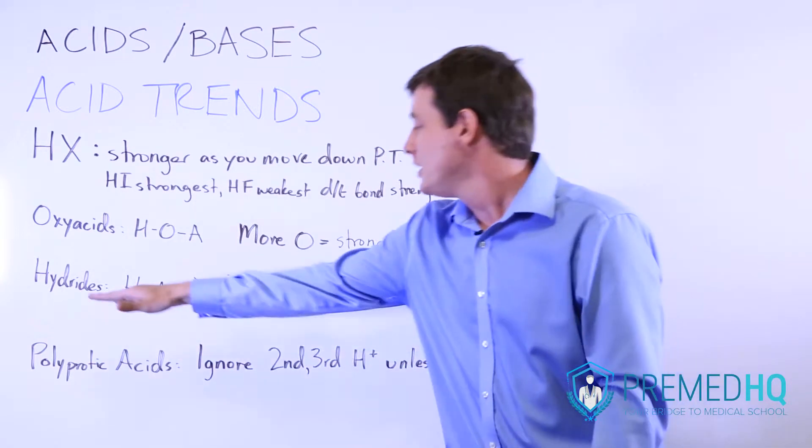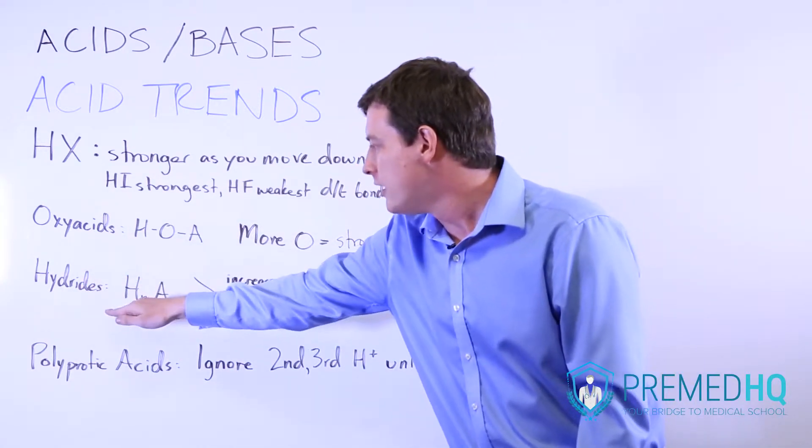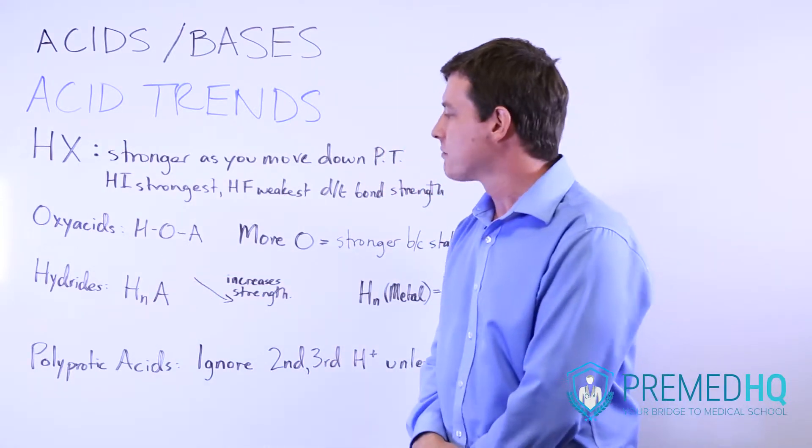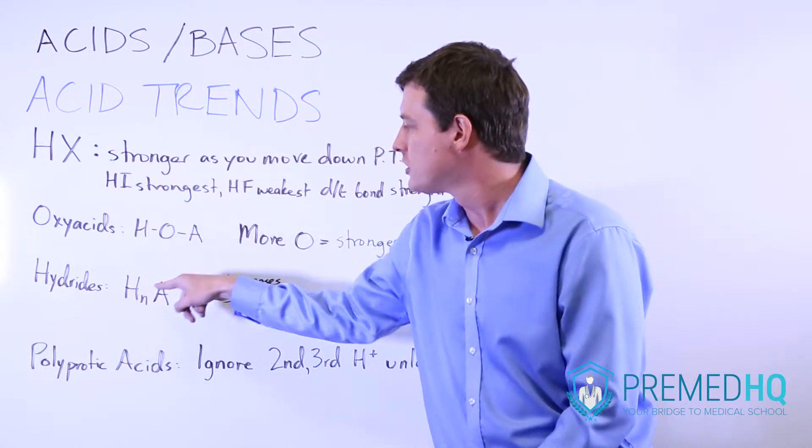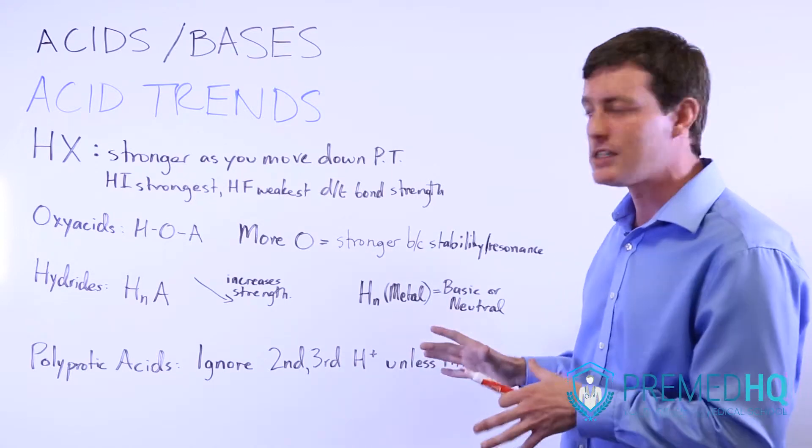Now for hydrides, and a hydride is anything that consists purely of hydrogens and one other element. And it could be something like HCl, or it could be something where you have multiple hydrogens bound to something like H2O, for example, or other species like that.